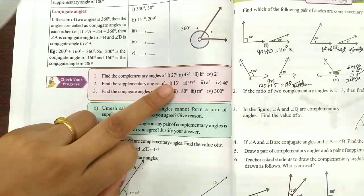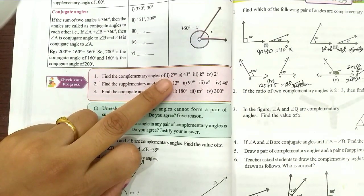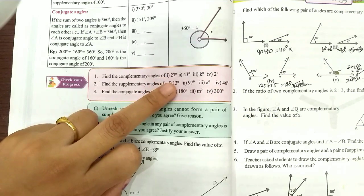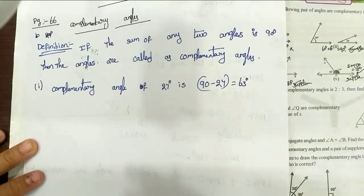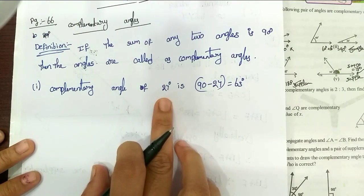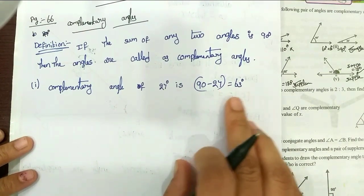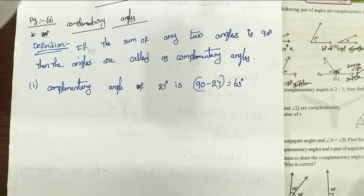Let's look at the first one. The angle is 27°. So 27 plus the complementary angle equals 90 degrees. The answer is 63. The complementary angle of 27 degrees is 63. If you add 63 and 27, you get 90.